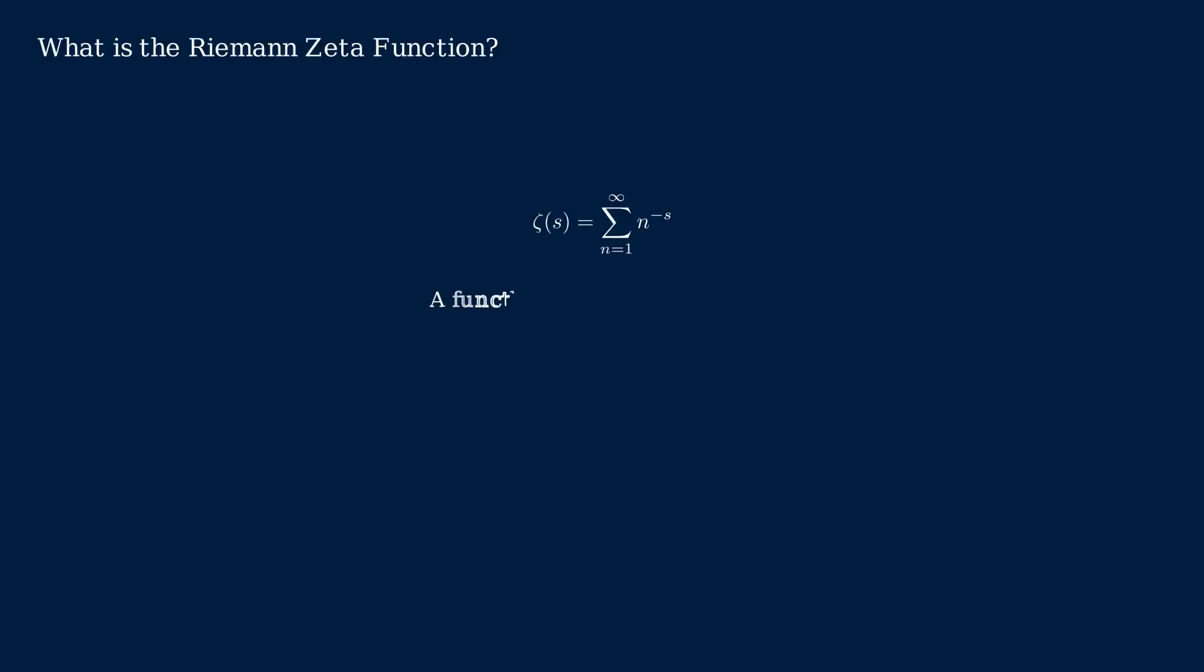The Riemann zeta function is a cornerstone of number theory. Denoted as zeta of s, it's a function of a complex variable s. For values where the real part of s is greater than 1, zeta s is defined by this infinite sum: 1 over 1 to the power s, plus 1 over 2 to the power s, plus 1 over 3 to the power s, and so on.